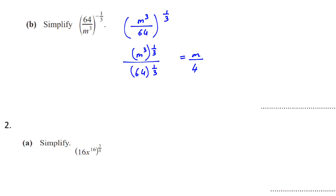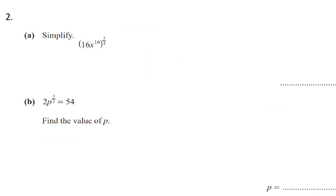Question number 2: simplify 16x to the power of 16, bracket to the power of 3 over 4. This power applies to both 16 and x. Therefore we can write it as 16 to the power of 3 over 4 and x to the power of 16 times 3 over 4. Putting 16 to the power of 3 over 4 in the calculator gives 8, and 16 times 3 over 4 gives 12. So the answer is 8x to the power of 12.